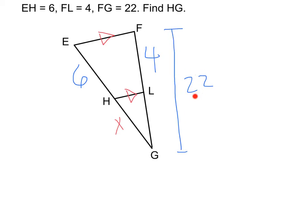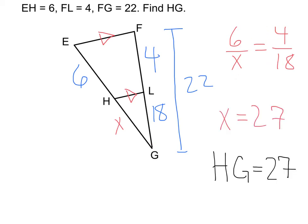Now, before we could set up our proportion, we need to know what this side is because we don't want this entire side. We only want the parts of each triangle. Well, we can simply do 22 minus 4, which is going to give us this LG side length of 18. Now we can set up our proportion. That's going to be 6 over X equals 4 over 18. And if we solve for X, we'll get 27, which means that our missing side, HG, is going to equal 27.